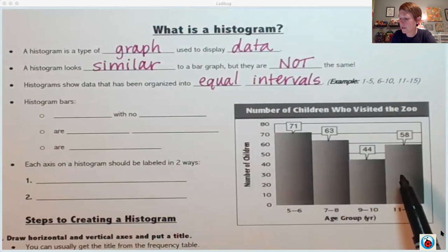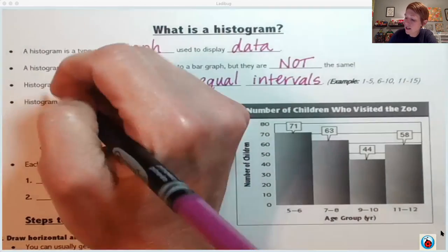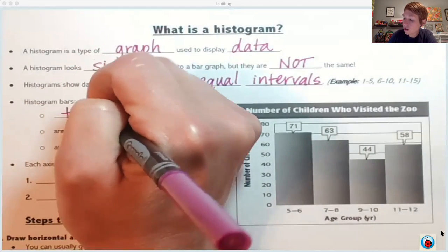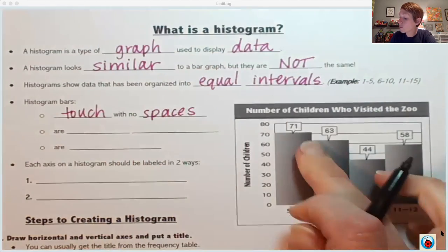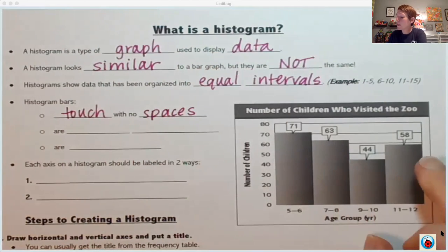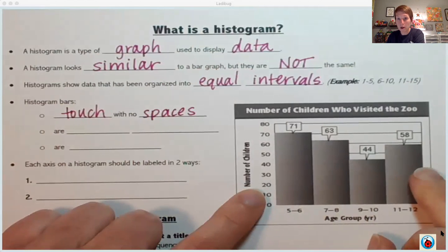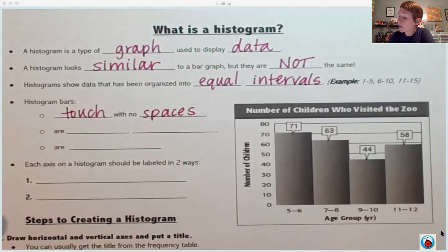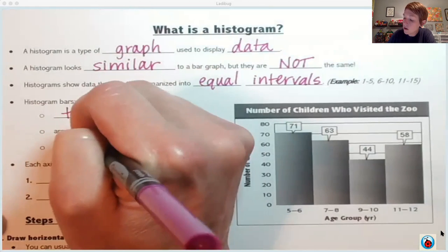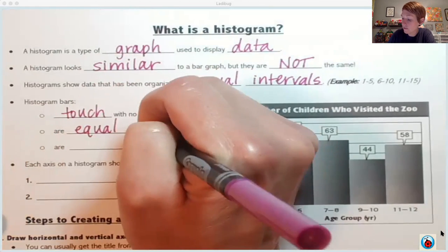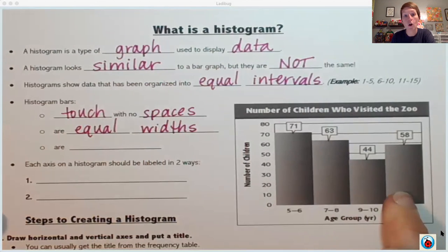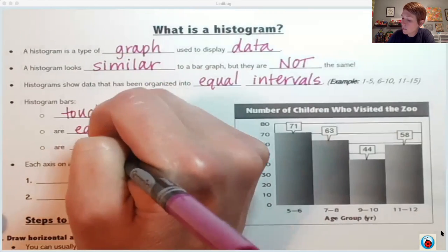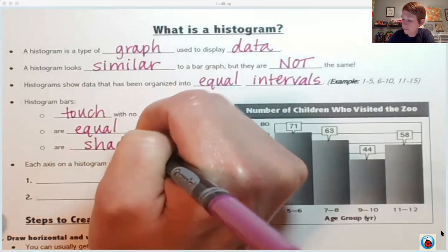Let's talk about the bars themselves. Histogram bars touch with no spaces. Notice there are no spaces between the bars and there are no spaces before or after the bars inside the graph. Histogram bars are equal widths. We don't have some super skinny and some super fat. They are all the same width. Next up, you can see that those bars are shaded.